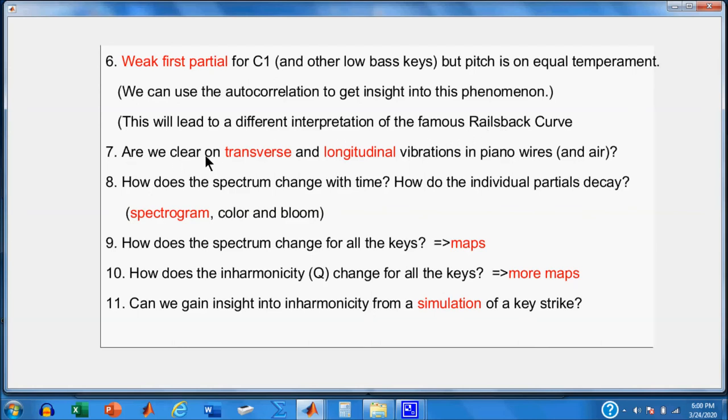We also will have to take another look and go back to the beginning and kind of compare transverse and longitudinal vibrations in piano wires and in air. And just kind of get back to some of the fundamentals there. Another question you might be thinking about is how does the line spectrum or how does the spectrum change with time? Well, we're going to use the spectrogram to look into that. And that'll give us some insight into color and bloom. And the other question might be, how does the spectrum change for all the keys as you go from A0 all the way up to C8? Well, that'll bring us into maps, which we'll talk about. Which also asks, how does that inharmonicity change for all the keys? So we'll have some more maps. And then finally, can we spend some time using simulation to gain insight into inharmonicity?